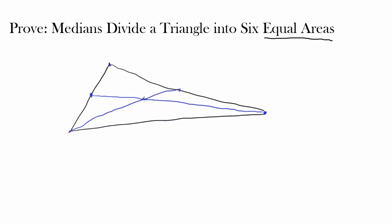All three medians are concurrent — they all meet at the same point, which is also not immediately intuitive. If you want to know how we can prove that all of them intersect at the same point, you can click the link to go to my video where I prove that all medians are concurrent. In this video, we're going to assume you already have knowledge of that and continue.